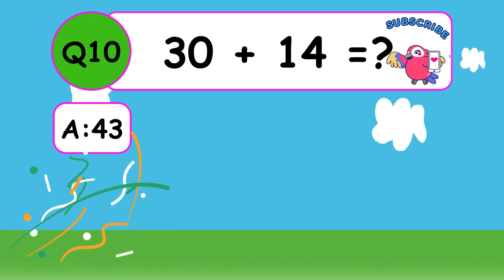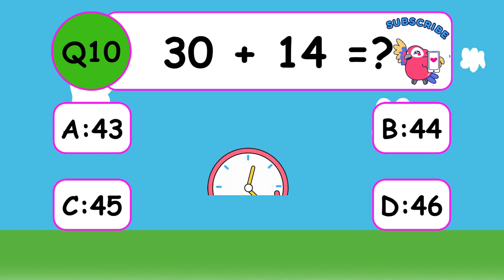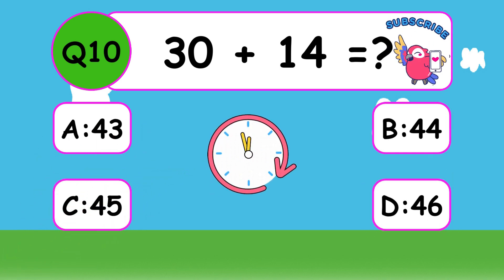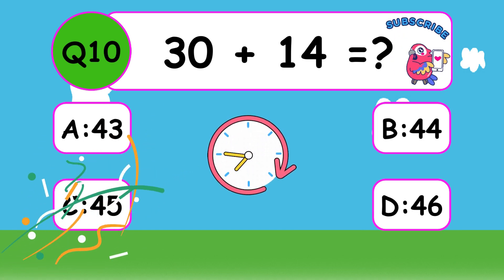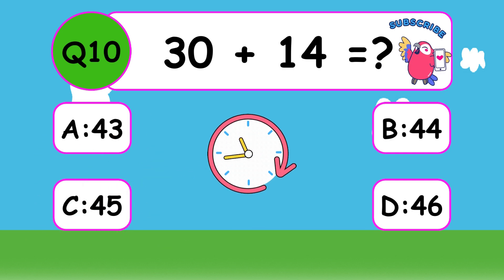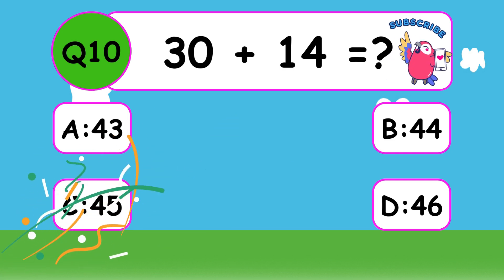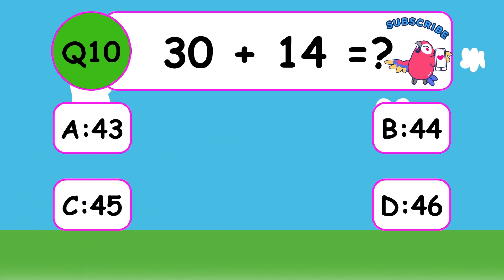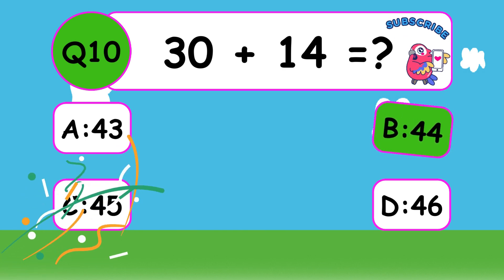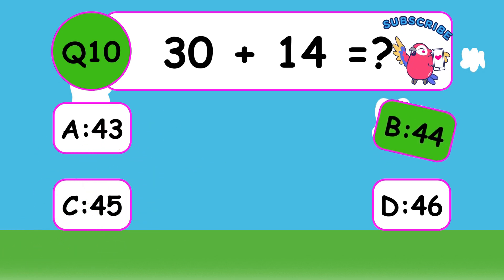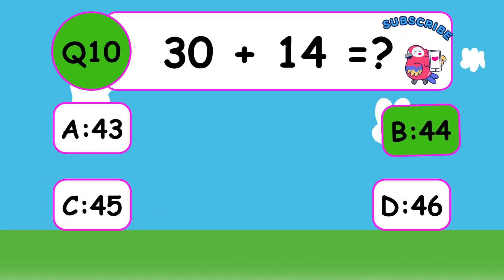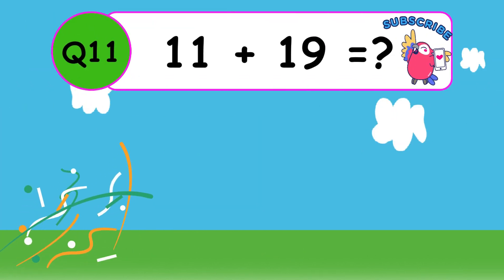What is 20 plus 14? The answer is B, 44. Well done, 20 plus 14 equals 44.